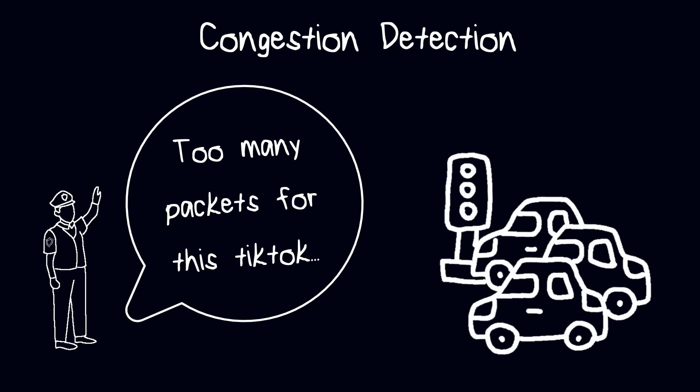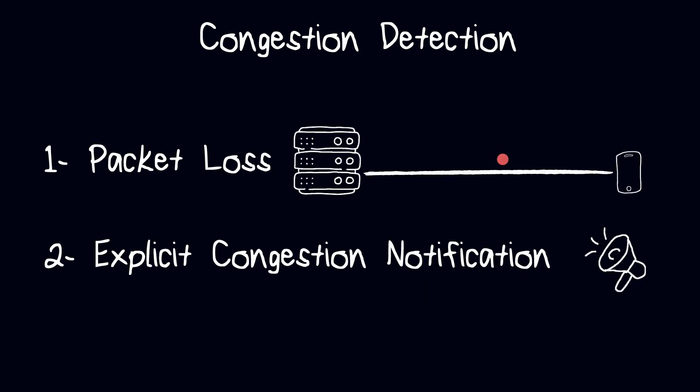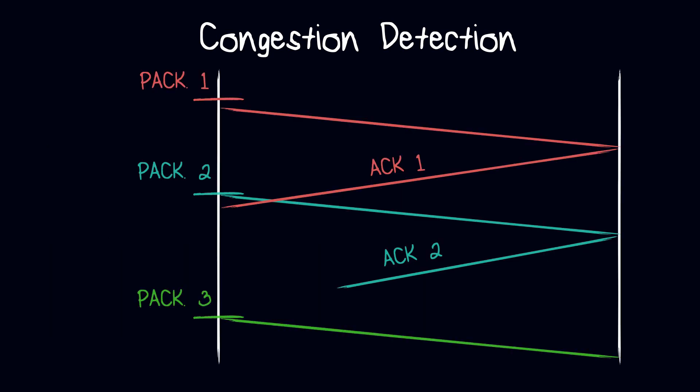Now let's explain what happens when congestion is detected. Congestion detection refers to the process of identifying network congestion. Two common methods for detecting congestion are packet loss and explicit congestion notification. Let's visualize packet loss. For each packet sent, the sender keeps a timer for its corresponding ACK. If that timer expires, then the packet is considered lost.